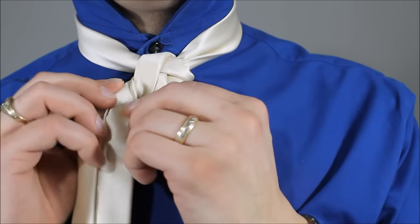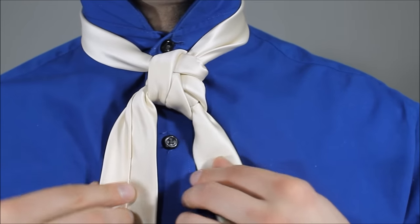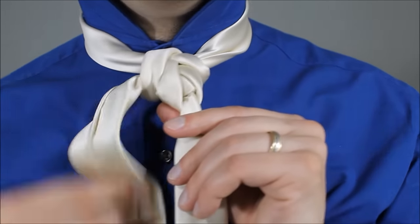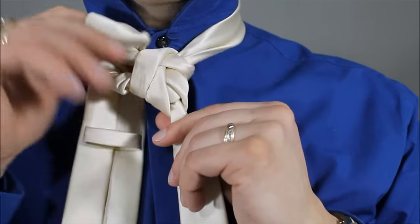Alright, so here your seam side should be facing out. If it's not, just twist your tie over like so, and you're going to feed it up through the back of your necktie.